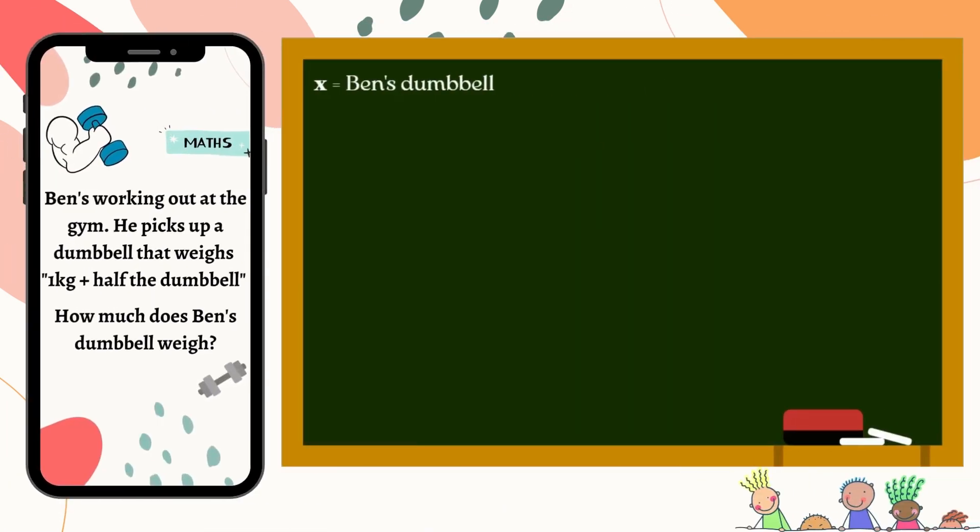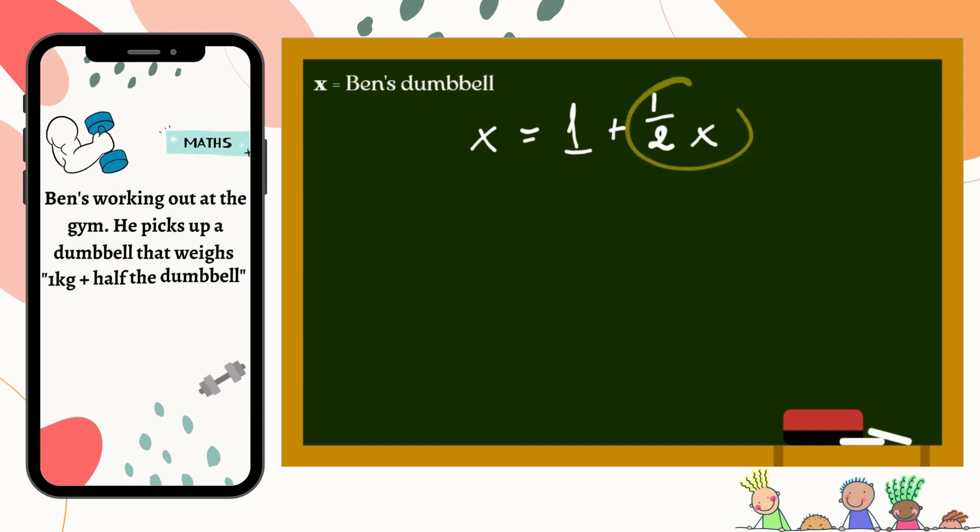Let x represent Ben's dumbbell. Ben's dumbbell weighs 1kg plus half the dumbbell. Written mathematically, we'll have x equals 1 plus half of x. Now we have to move all unknowns to one side. Let's move half of x to the x on the left side. Whilst we do this, we must remember to change the sign from positive to negative.